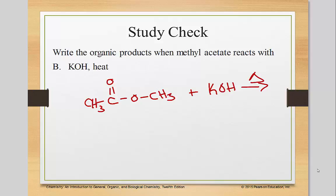So we still have that CH3, C double bonded O. But instead of the OCH3, now we have O with a negative and a K plus. And once again we have the methanol. And there's your acid hydrolysis and saponification.